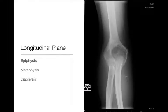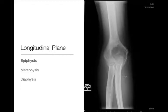So we've talked about where lesions occur in the transverse plane: whether they're centrally located, eccentrically located, cortically based, or juxtacortical. Next we'll talk about lesions located in the longitudinal plane.